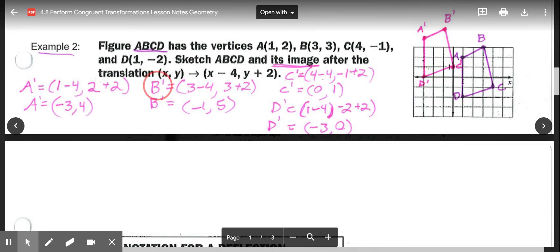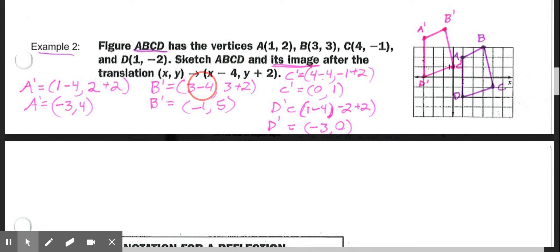Then we do the same with B, C, and D. The x value minus 4, y value plus 2, according to the translation. So B prime is at (-1, 5). For C, 4 minus 4, comma -1 plus 2, puts us at C prime of (0, 1). And then for D, 1 minus 4, and then -2 plus 2, puts us at the point (-3, 0).